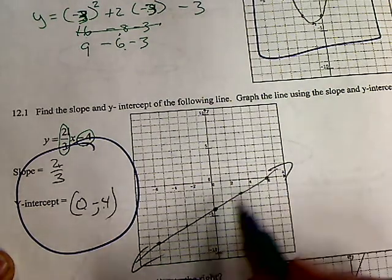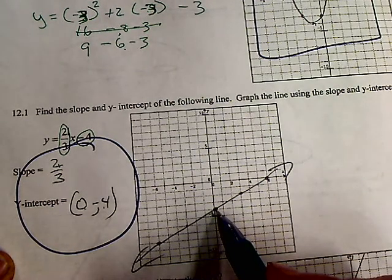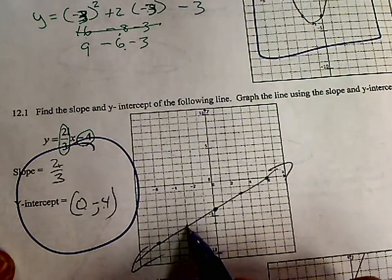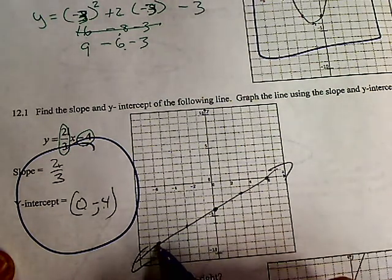Or a negative divided by negative is also a positive, so you can go down 2 in the negative direction, negative direction. Still is a positive slope. Negative negative. Draw your line.